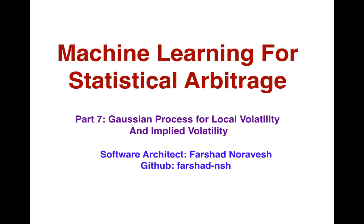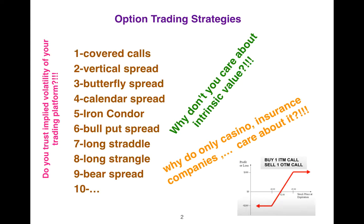Last time I talked about Gaussian process, but now I will show you how we can use it for local volatility and implied volatility in option trading. As you know, there are several strategies for option trading: covered calls, vertical spread, butterfly spread.